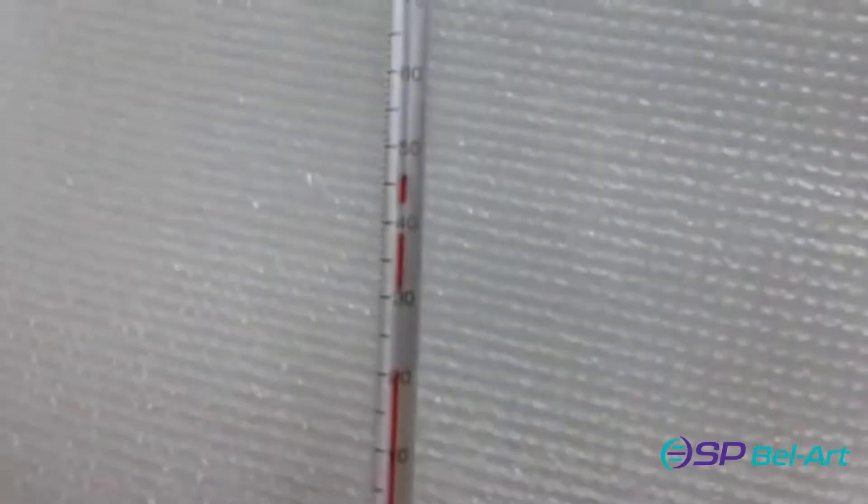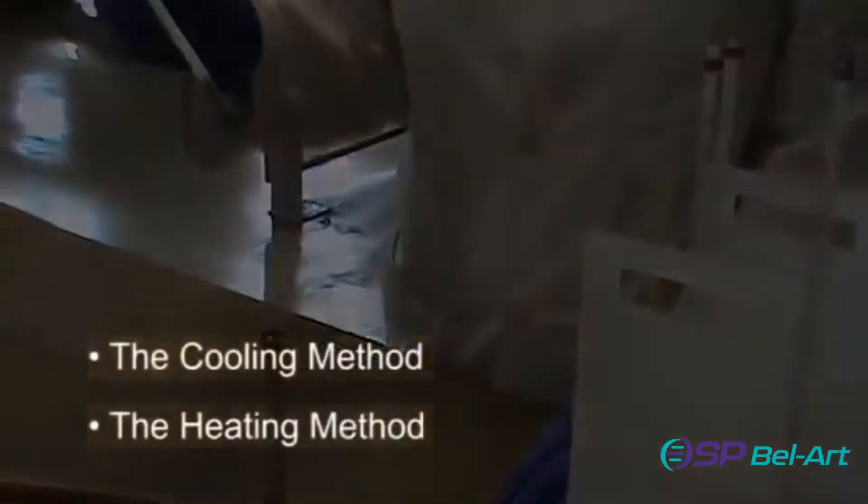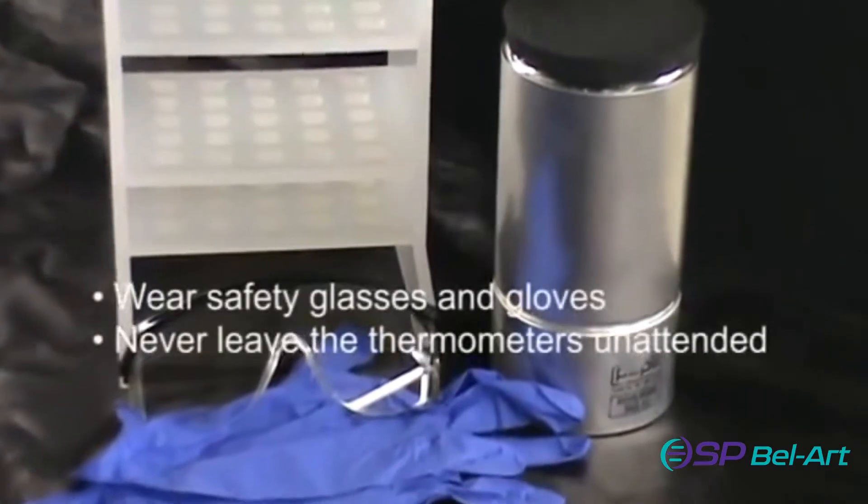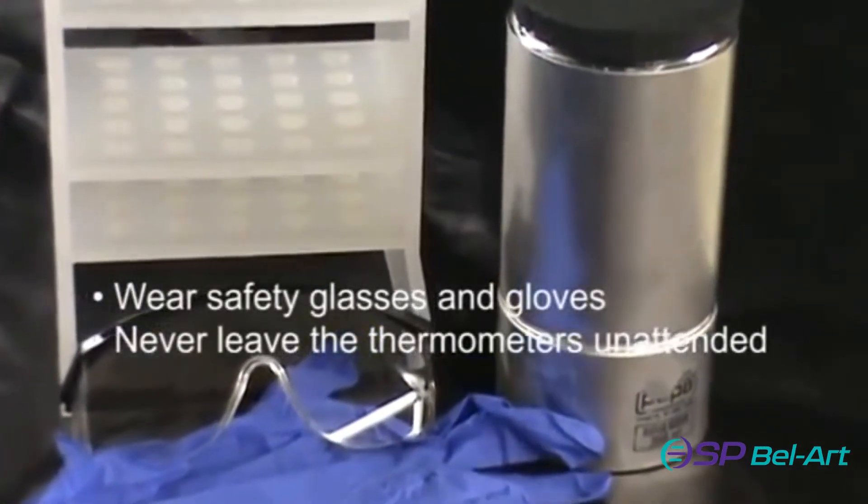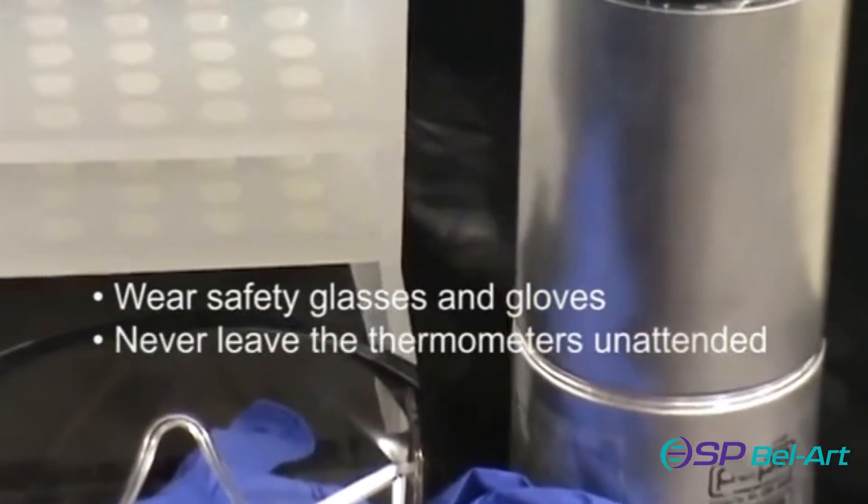There are two simple methods for reuniting separated thermometer liquid: a cooling method and a heating method. With either method, we strongly suggest you wear safety glasses and gloves and never leave the thermometers unattended while working with them.